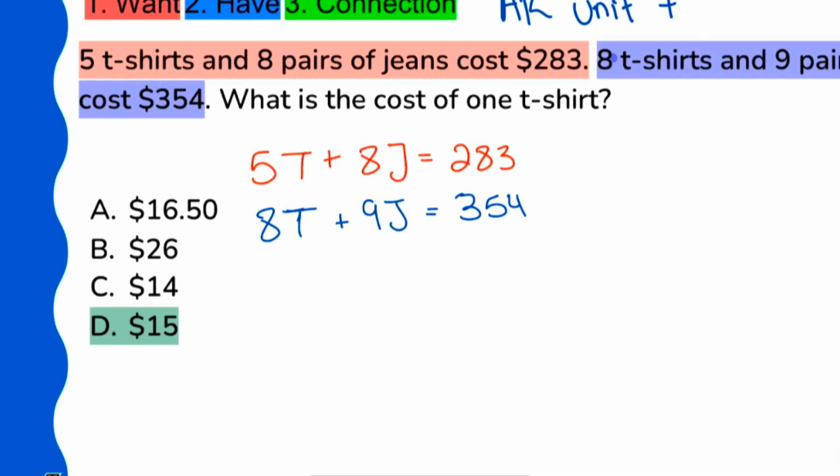You're more than welcome to do it that way. But if you notice, getting rid of the T might be a little bit easier because you're multiplying smaller numbers. Again, it's totally going to be up to you all the way through.